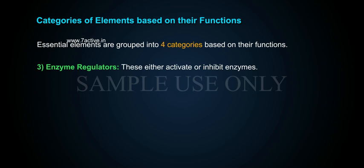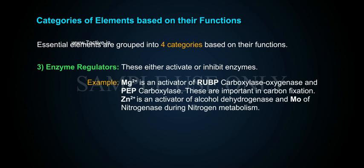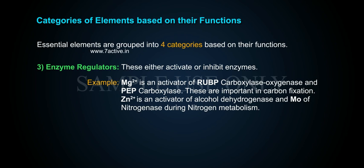Third, enzyme regulators — these either activate or inhibit enzymes. For example, Mg2+ is an activator of RuBP carboxylase-oxygenase and PEP carboxylase, which are important in carbon fixation. Zn2+ is an activator of alcohol dehydrogenase and Mo of nitrogenase during nitrogen metabolism.